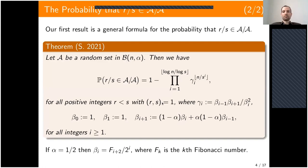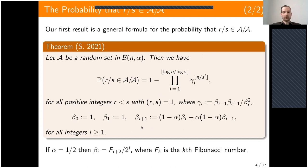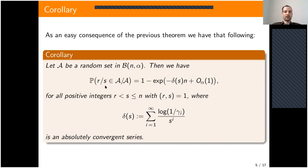I thought about a general formula for this probability, and this is the result I obtained: let A be a random set; then the probability that the rational number r/s belongs to the random ratio set is given by a formula involving a product with a second-order linear recurrence depending on α. It follows quite easily from this result a corollary which shows that the probability is essentially one minus an exponential in n.